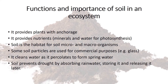Soil, air, and water are the three major natural resources. Soil is the upper layer of the earth which supports mostly plant and animal life. There are many functions of soil in an ecosystem. Firstly, soil provides support to plants. It also provides plants with nutrients and water, which is mainly used for the process of photosynthesis. Soil also becomes inhabited by micro as well as macro organisms, and some soil particles are used for commercial purposes.